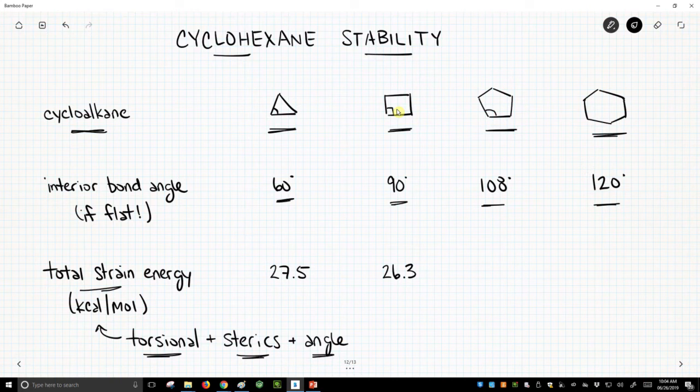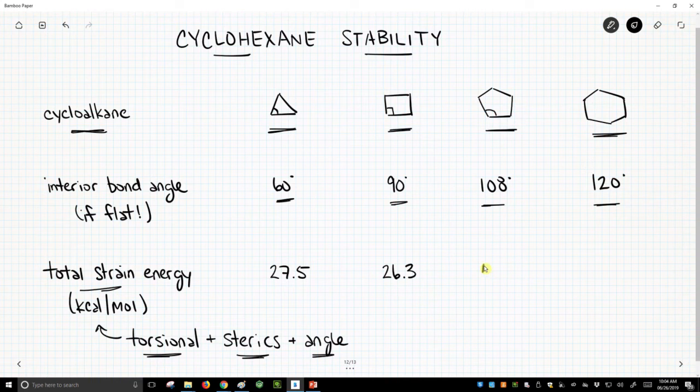Once we go to cyclopentane, the strain energy goes way down, 6.2 kcals per mole.